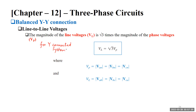This relationship holds for Y-connected systems. So if your source is Y or your load is Y and you need to convert between line voltage and phase voltage, you use V_L = √3 · V_phase. This is different for delta-connected systems, which we'll cover when we reach that topic.